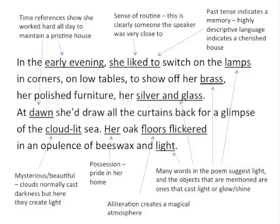At dawn, she'd draw back all the curtains for a glimpse of the cloud-lit sea. That phrase 'cloud-lit' creates a kind of mysterious, beautiful image. Clouds are something that normally cast darkness, but here they're creating light — so when the mother is around, even clouds have the ability to create light. 'Her oak floors flickered' — that personal pronoun 'her' gives a sense of possession, so she has pride in her home. And the alliteration on 'floors flickered' creates a magical atmosphere, suggesting the pride she takes in looking after her house.